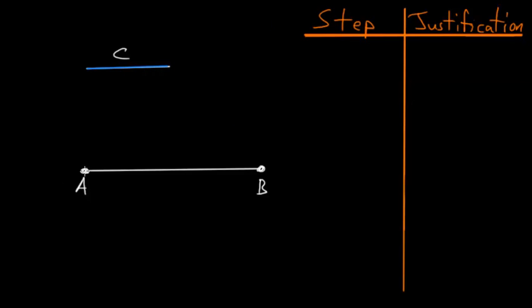To start this, what we need to do is at this point A, create a line equal to this line here C. And we can label this point here D. So what we have is that the line AD is equal to the line C.